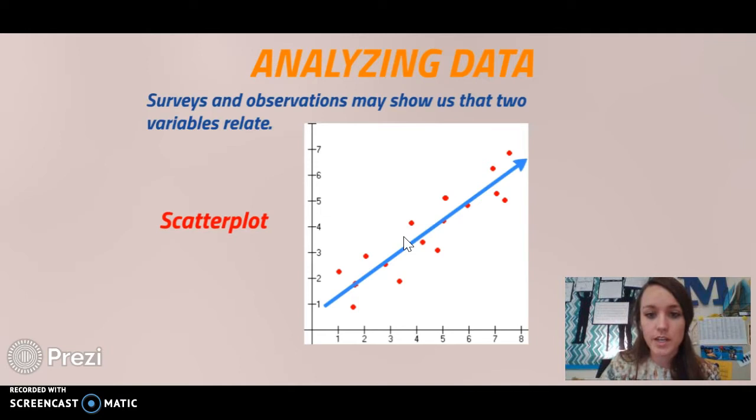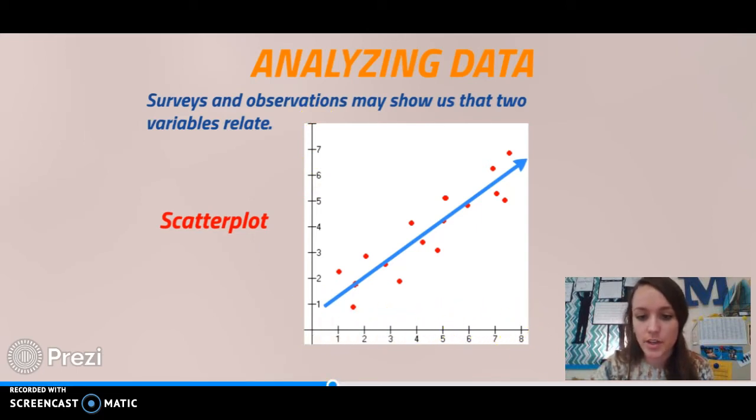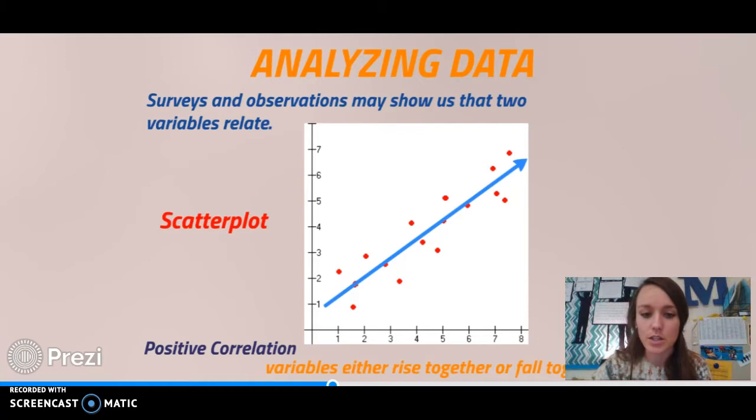Right here we see you could draw a line of best fit, or the trend line. And it appears to be going up on our y-axis and also going up on our x-axis. We call that a positive correlation when both variables are rising together. An example of that would be the more miles you run, the more calories you burn, so it appears to be working together.